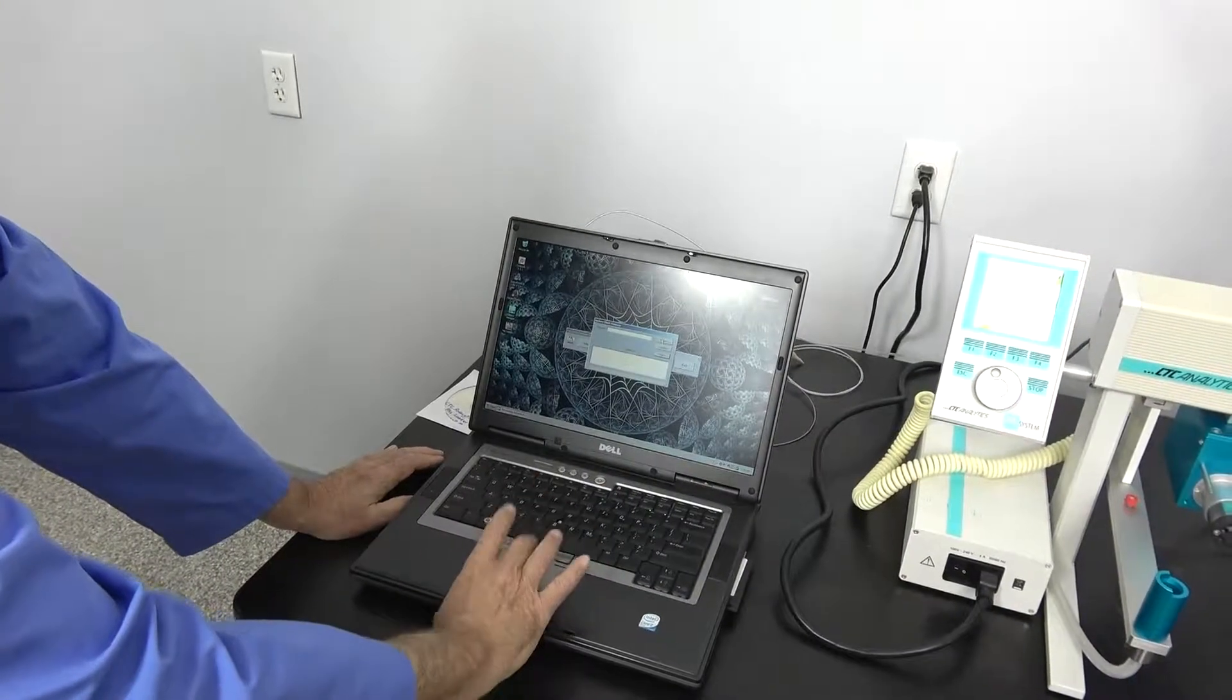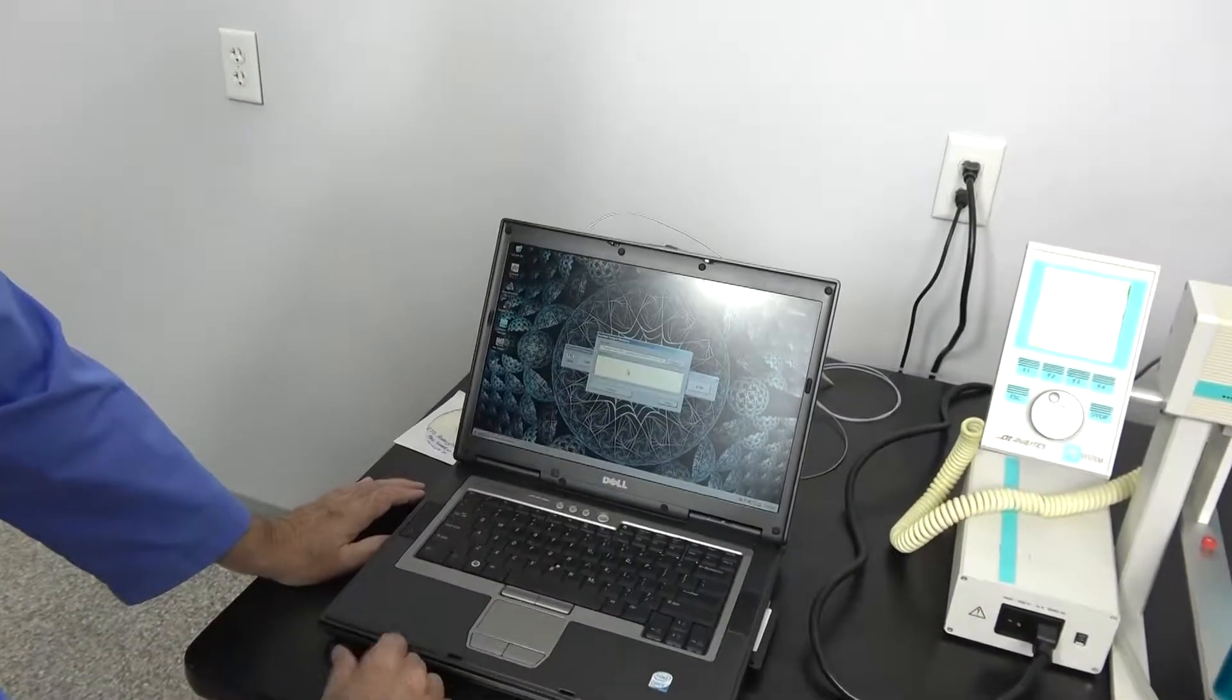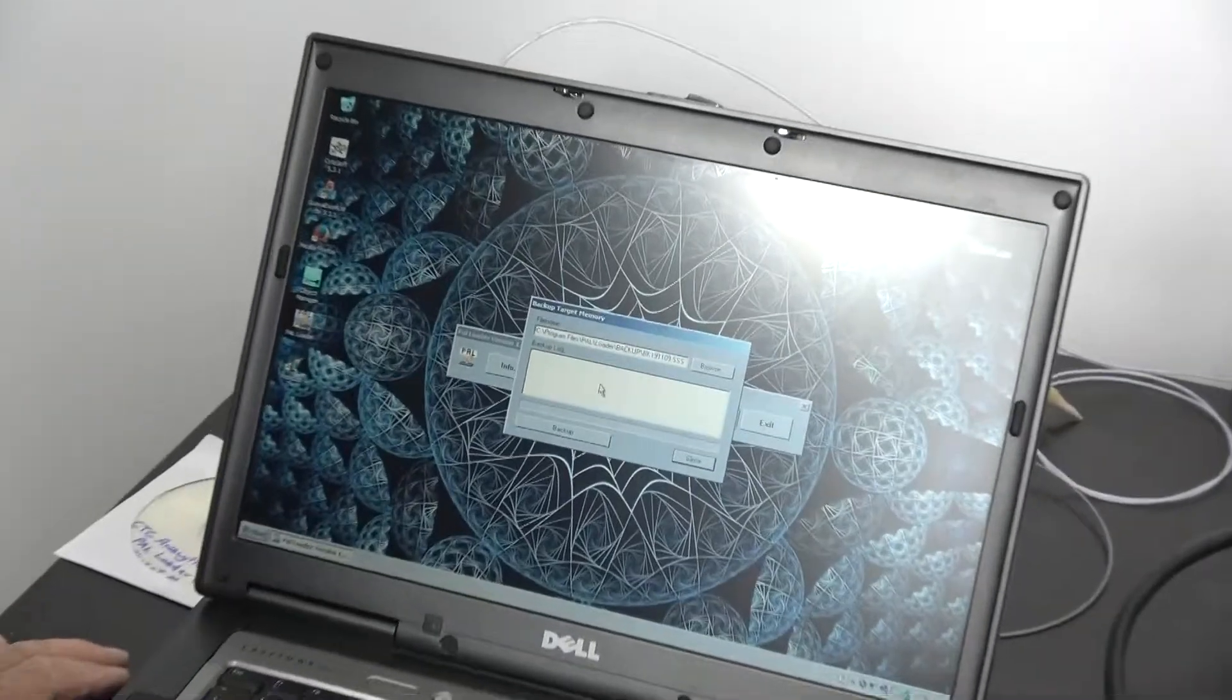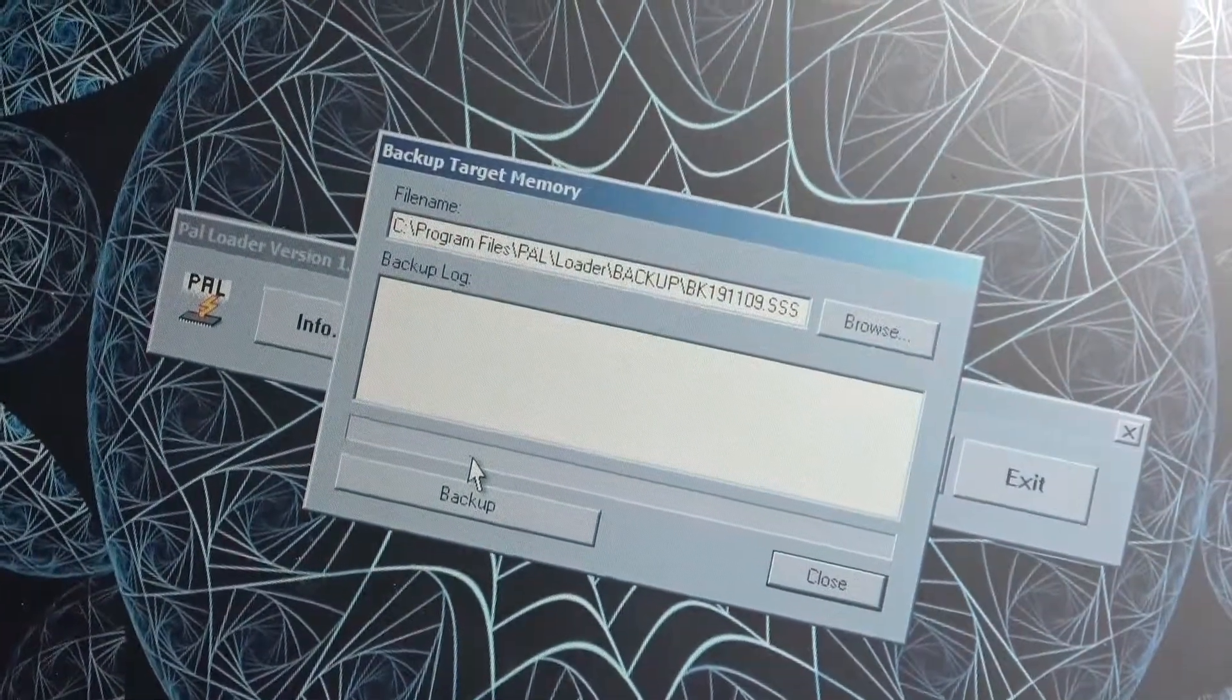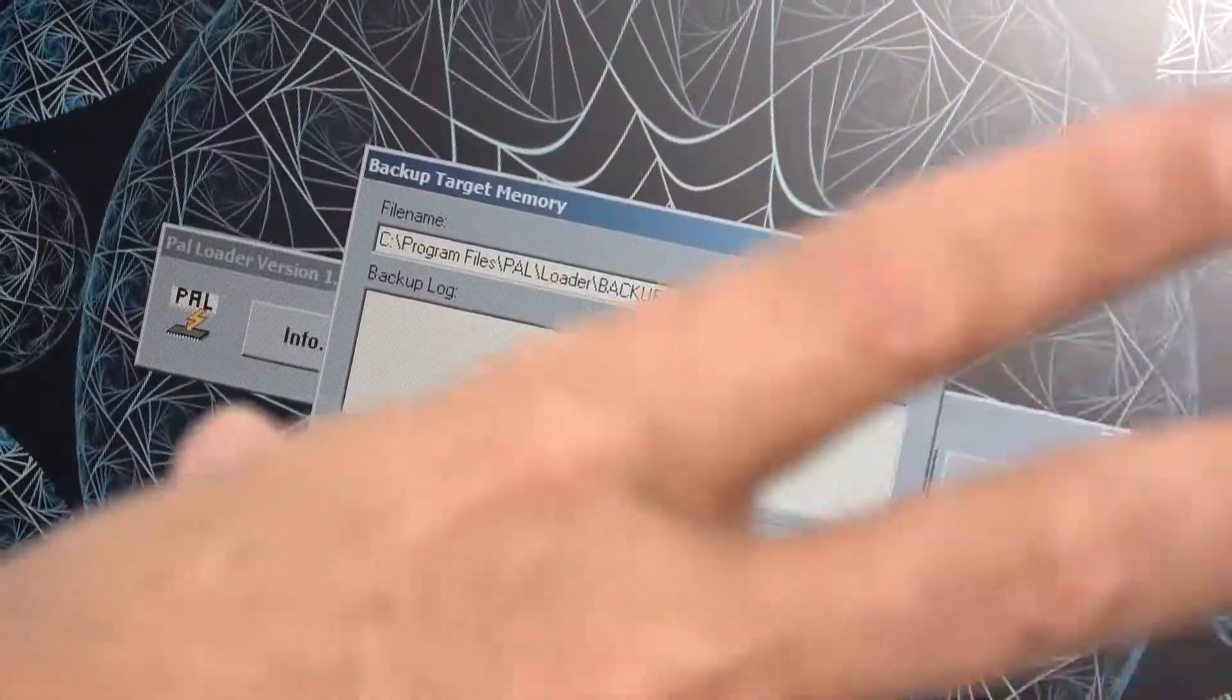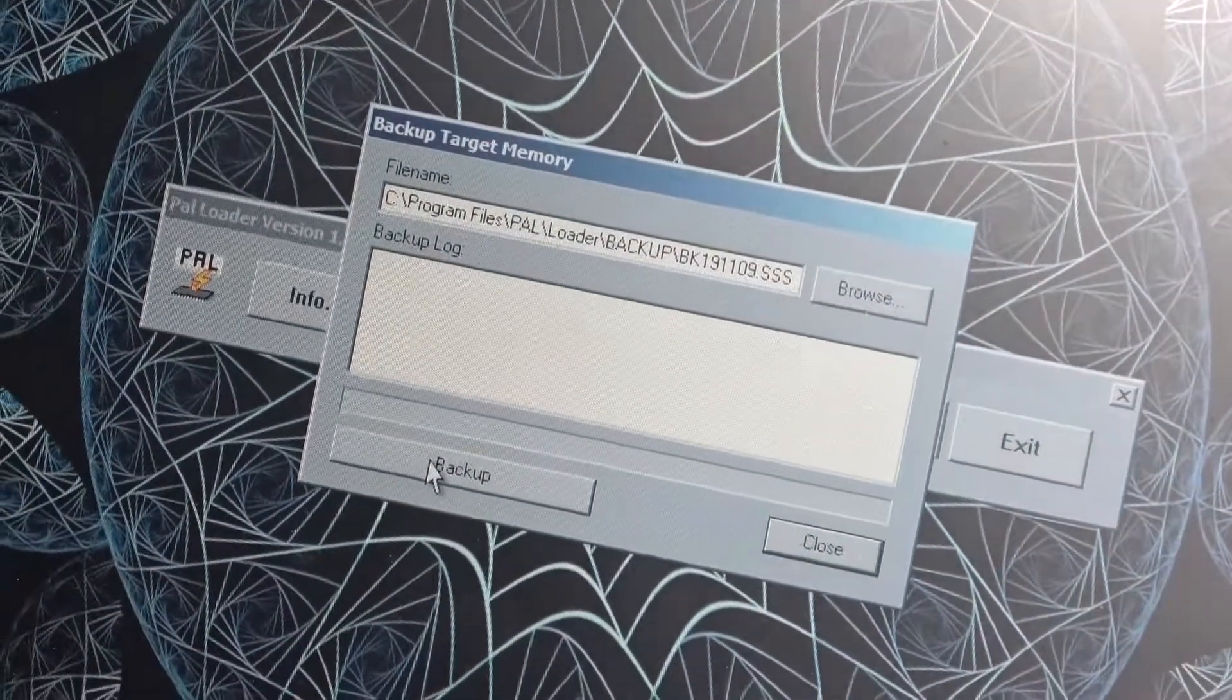You browse to tell it where you want to go. To back up your unit, you would click back up, tell it where you want to put it. It takes a few minutes to do so I'm not going to do the final back up here. It'll log into the system, download the information, save it to your hard drive.